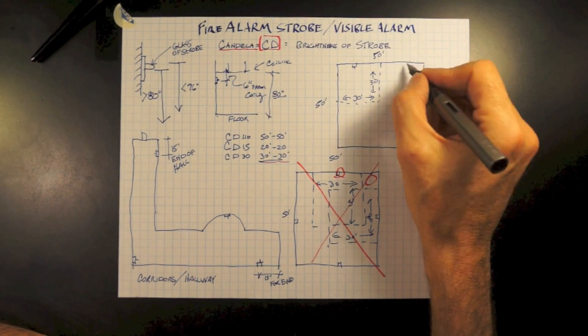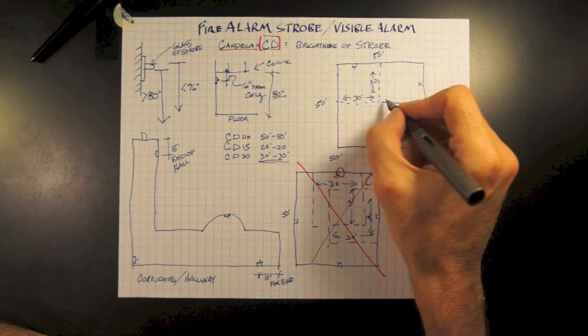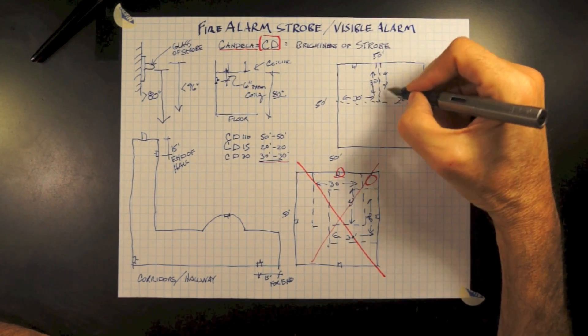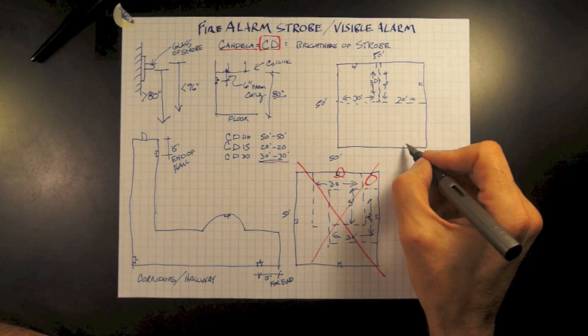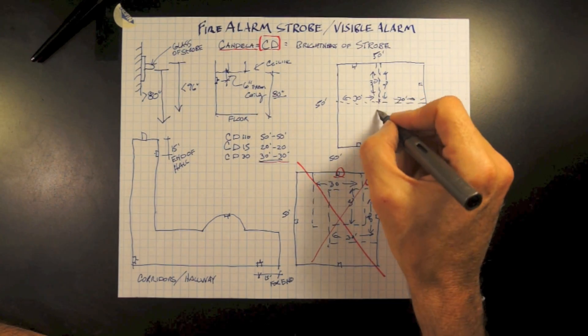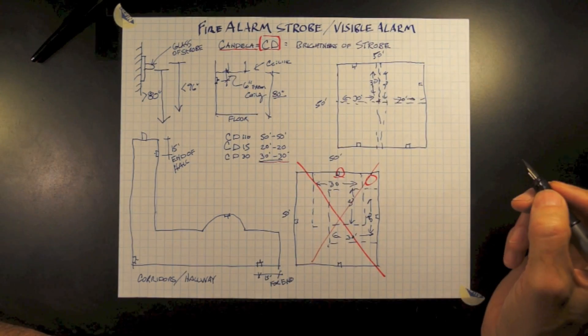Taking the other candela or strobe, placing it and it having also a 30 candela, reaches 30 feet in front of it, 15 feet from the wall.